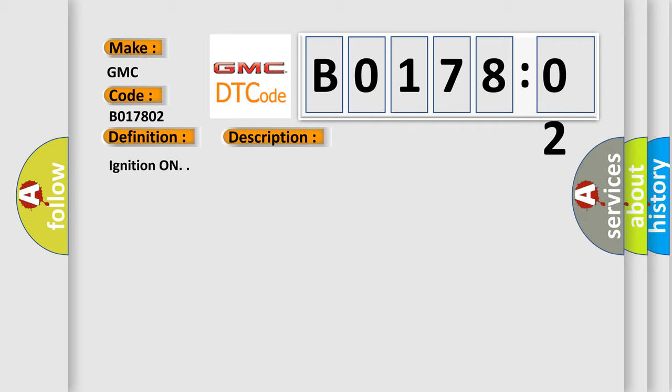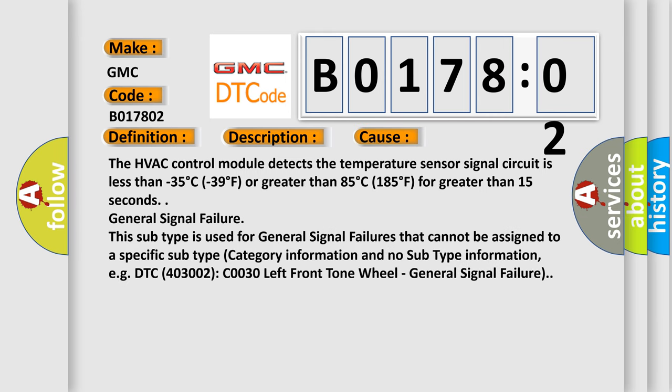This diagnostic error occurs most often in these cases. The HVAC control module detects the temperature sensor signal circuit is less than minus 35 degrees Celsius or greater than 85 degrees Celsius for greater than 15 seconds.